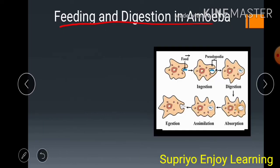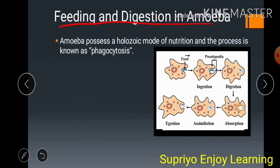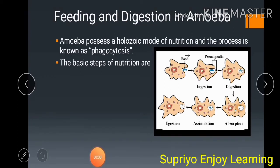Amoeba possesses a holozoic mode of nutrition and the process is known as phagocytosis. The basic steps of nutrition in amoeba are similar to human nutrition. The food of amoeba includes microscopic organisms like tiny plants and animals present in pond water. When amoeba senses its food, it pushes out pseudopodia and engulfs it.